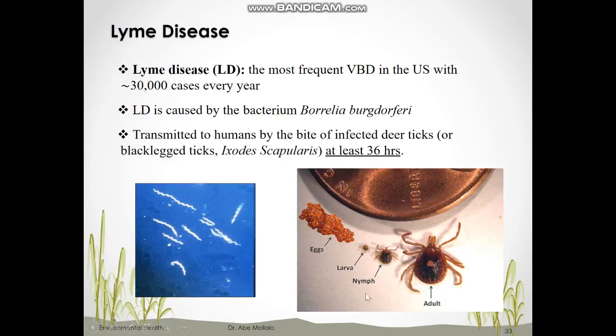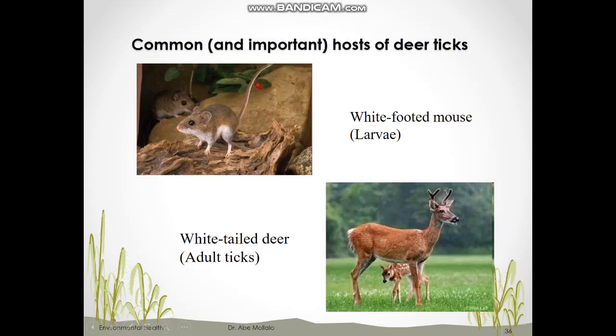Looking at the size comparison with a coin, you can see the different life stages: eggs, larvae with six legs, nymphs with eight legs, and adults. The nymph stage is the most dangerous. Depending on the life stage of the tick, the hosts differ. For larvae and nymphs, which are small and immature, the host is small mammals like the white-footed mouse, which carries Borrelia bacteria but doesn't get infected itself. For adult ticks, which are larger, the host is the white-tailed deer.